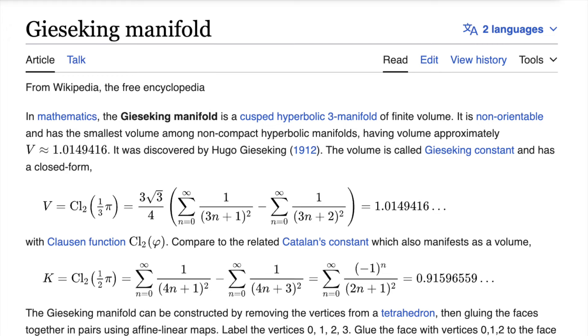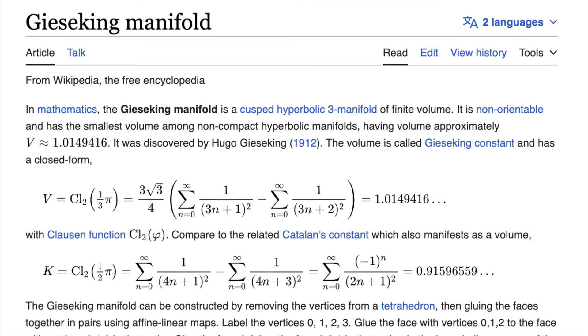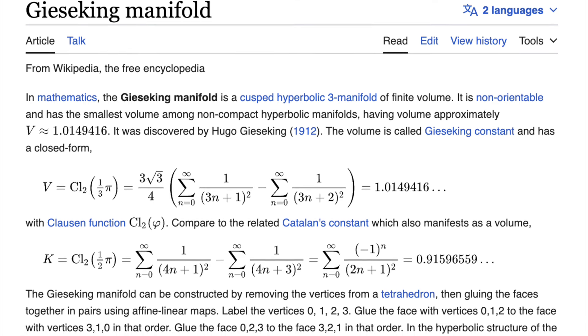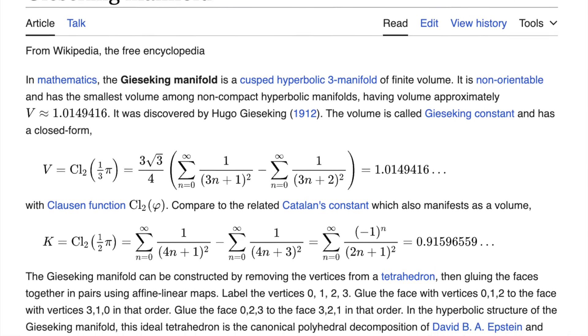Well, there are the simplest possible three-dimensional or three-manifold that you can have is called the Gieske manifold. And imagine you formed a Gieske manifold with some random wave interactions that just came together just right to form it.